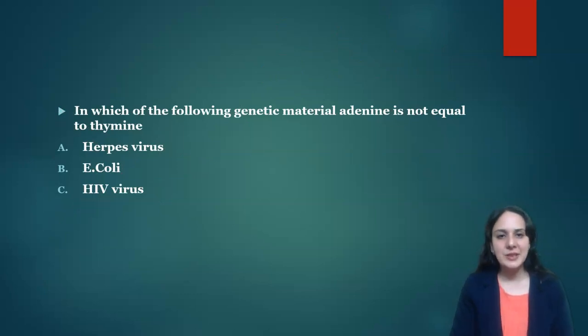Next was: in which of the following genetic material adenine is not equal to thymine? We know that in DNA adenine binds with thymine with two bonds. So in DNA-containing viruses like herpes virus and E. coli, adenine will always be equal to thymine. But HIV, which is an RNA virus which is single-stranded, here adenine will not be equal to thymine. So this is the answer.